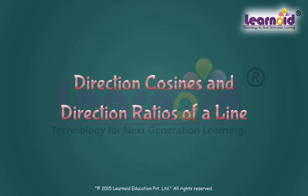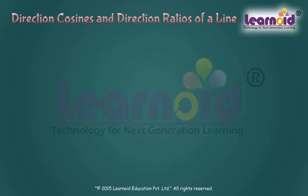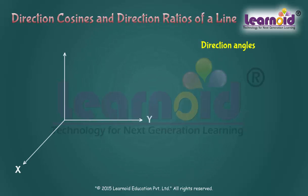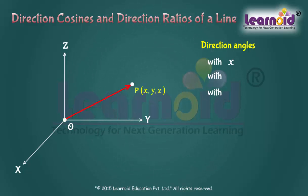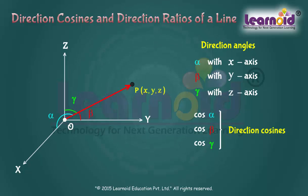Direction Cosines and Direction Ratios of a Line. Direction Angles are the angles made by the directed line OP with the X, Y and Z-axes. These are Alpha, Beta and Gamma. The cosines of these angles — Cos Alpha, Cos Beta and Cos Gamma — are called Direction Cosines of the directed line.